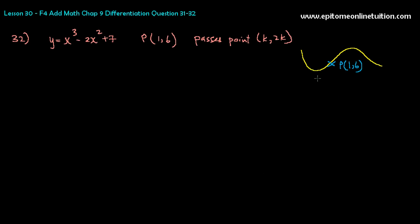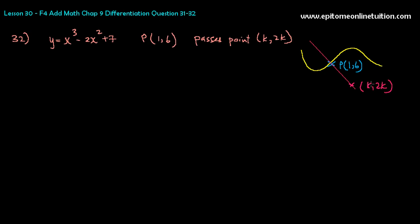Say this is P at (1, 6), and the normal line passes through another point (K, 2K). So the normal to the curve at point P passes through this point. To find the equation, always remember you need to find the gradient of the normal. The gradient of the normal comes from the gradient of the tangent, so find dy/dx first. That is 3x squared minus 4x.